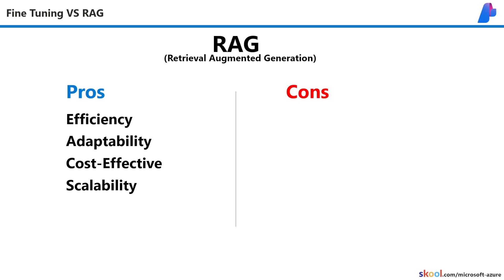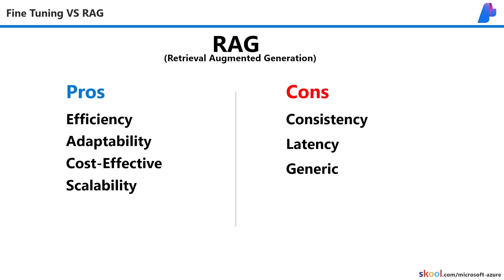The downsides of RAG are generally opposite of the fine-tuning pros, in that RAG may not always act exactly the way you want it to regularly. Its responses can be a bit slower because of the data retrieval and analysis involved with gathering, shaping, and responding to the modified context. And responding using RAG can be generic if the added context is not specialized enough.